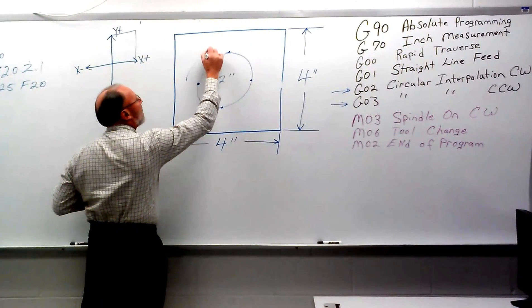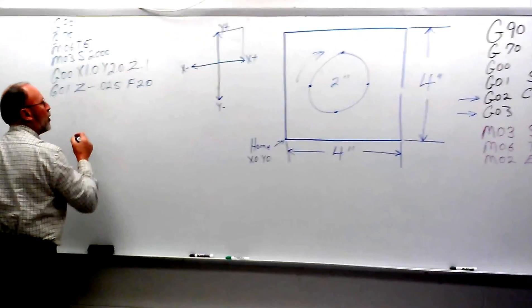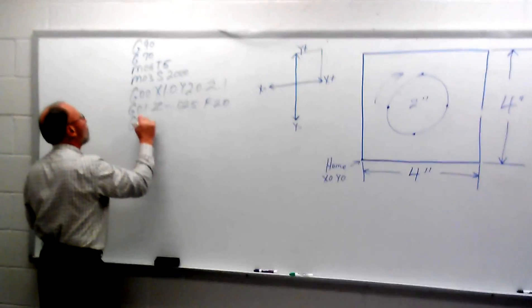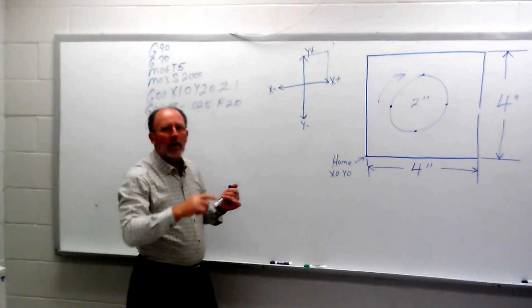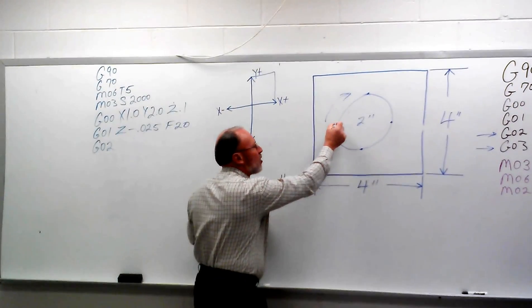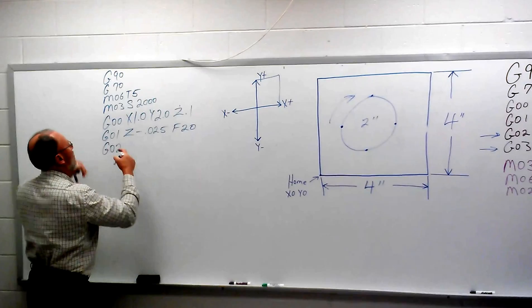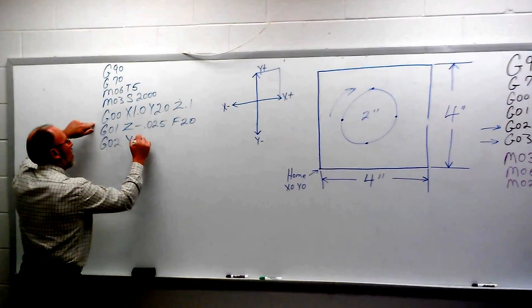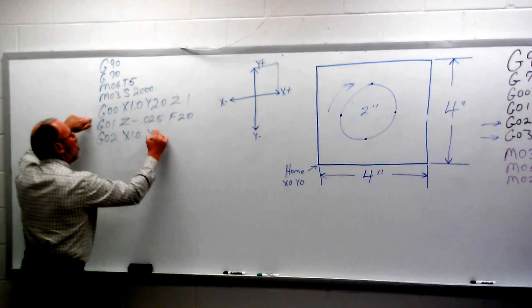I'm going to go in a clockwise direction, so the code for that is going to be a G02. Now if we're machining a complete circle, 360 degrees, if that's my start point, that's going to be my end point. So my end point is going to be X1.0. Y is going to be 2.0.